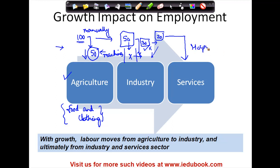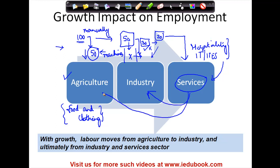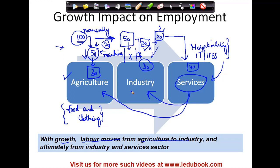Services like hospitality — they moved towards the services sector. This helped these people in serving those involved in agriculture and industry, and providing them with a better quality of life. With growth, labor moves from agriculture to industry because the work done by 100 is done by 50. As industry produced more advanced technology, the requirement was reduced from 50 to 30 in industry, and similarly down to 30 in agriculture with tractors and everything. The surplus from both sectors got into providing services, making the quality of life better for all.